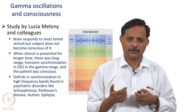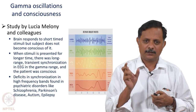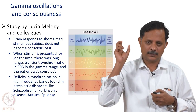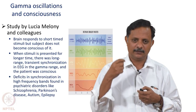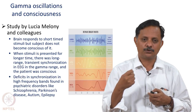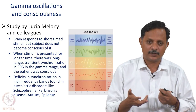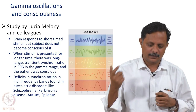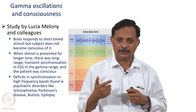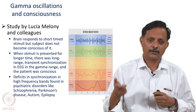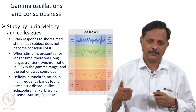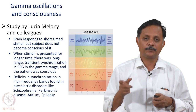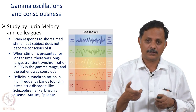A study by Lucia Melony and colleagues presented a brief stimulus to subjects. When the stimulus is too brief, the brain responds — you can see it in EEG or at the single-neuron level — but the subject shows no evidence of sensory awareness. When presented for a longer time, however, there is synchronized activity across large spatial scales in the brain. Long-range transient synchronization in the gamma range in EEG correlates with conscious awareness. In psychiatric conditions like schizophrenia, Parkinson's, autism, and epilepsy, this synchronization is somewhat weaker, suggesting deficits in conscious experience.